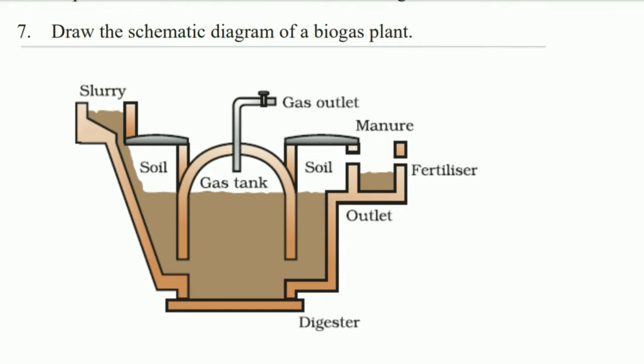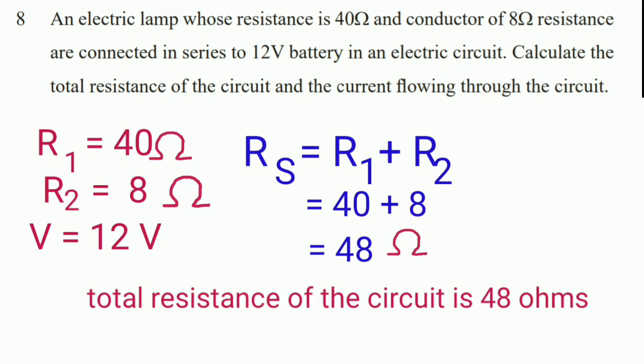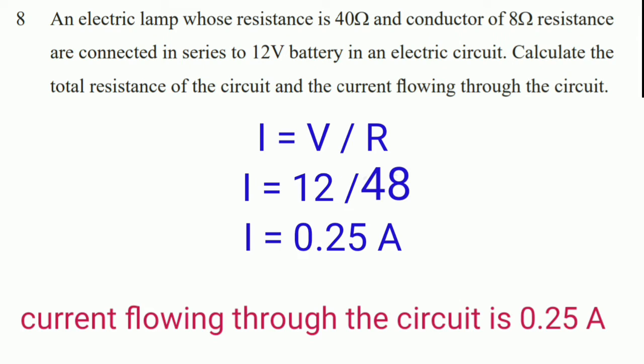Next question: an electric lamp of resistance 40 ohms and a conductor of 8 ohms resistance are connected in series to a 12-volt battery. Calculate the total resistance of the circuit. Since the two resistances are in series, R_S = R1 + R2 = 40 + 8 = 48 ohms.